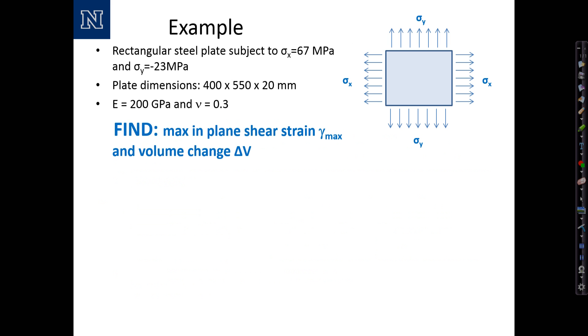First example: we have a rectangular plate subjected to normal stresses sigma x and sigma y in the x and y direction of 67 and negative 23 megapascals respectively. The plate dimensions are 400 by 550 by 20 millimeters. The elastic modulus is 200 gigapascals and Poisson's ratio is 0.3. We're asked to find the maximum in-plane shear strain gamma max and the volume change delta v.